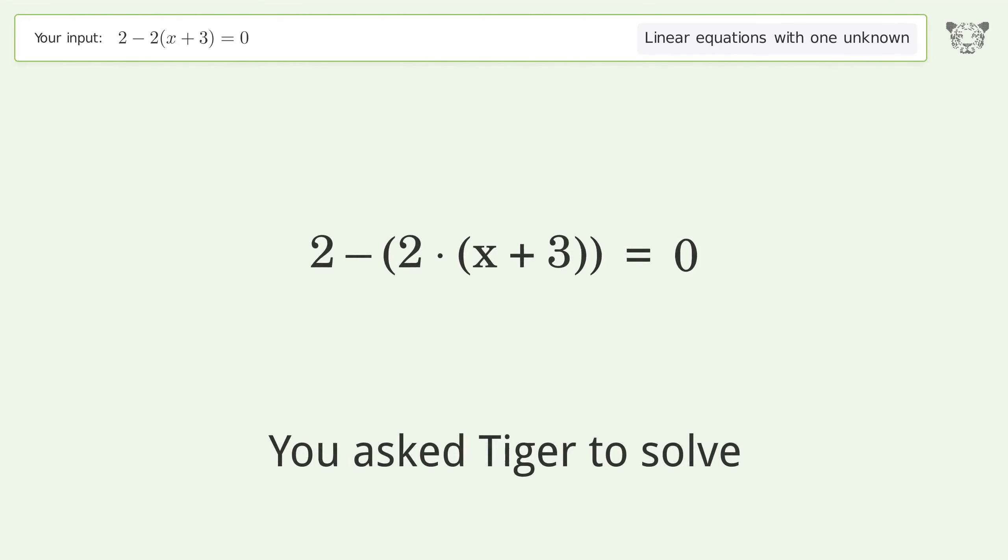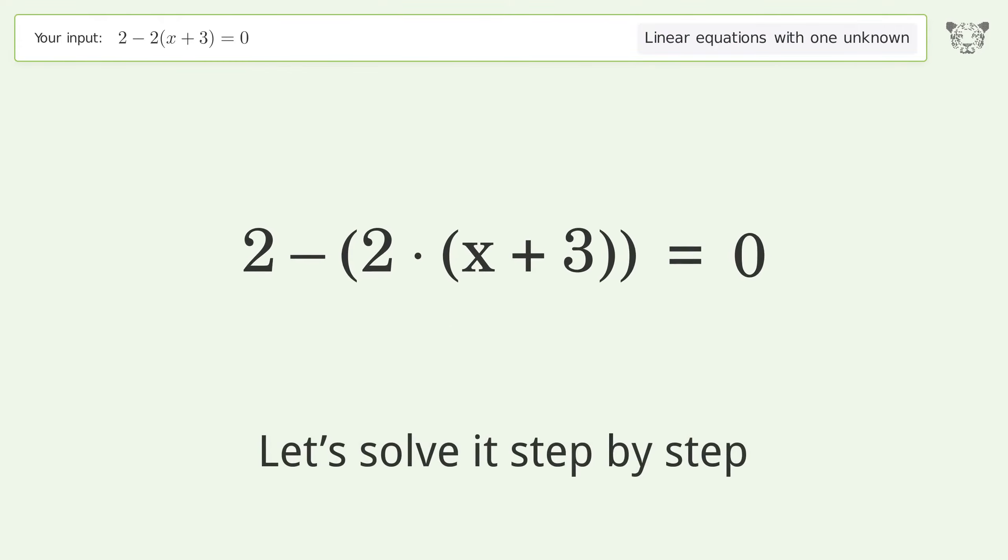You asked Tiger to solve this. This deals with linear equations with one unknown. The final result is x equals negative 2. Let's solve it step by step. Simplify the expression.